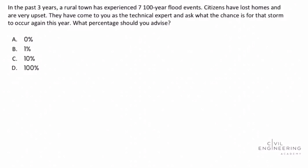In the past three years, a rural town has experienced seven 100-year flood events. Citizens have lost homes and are very upset. They have come to you as the technical expert and ask what the chance is for that storm to occur again this year. What percentage should you advise?